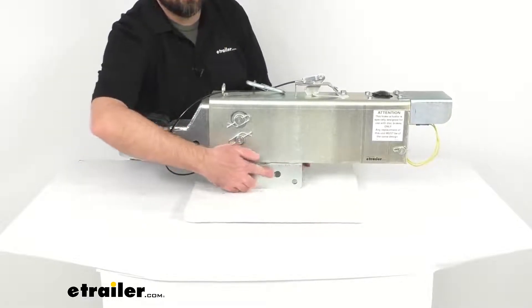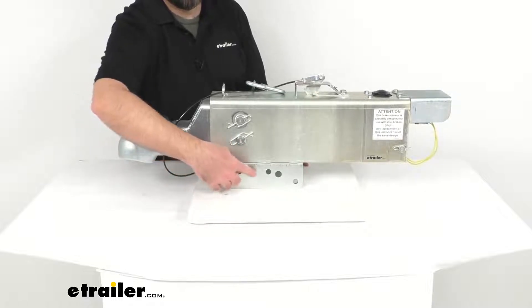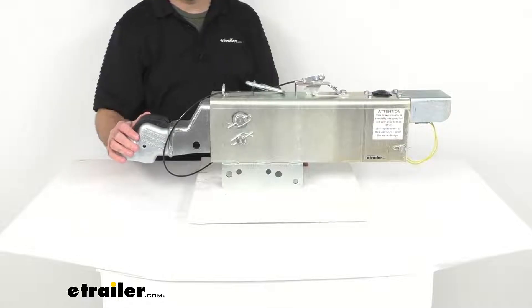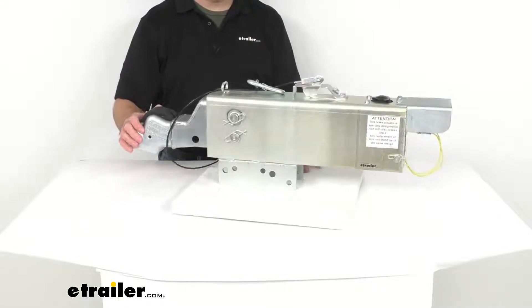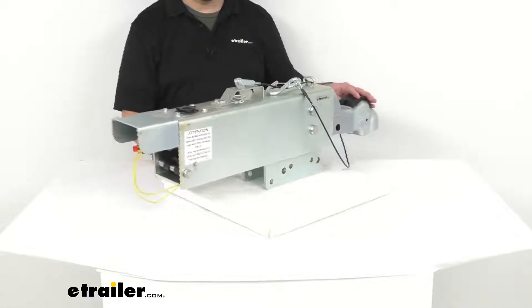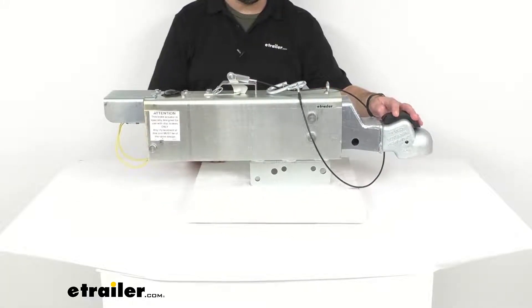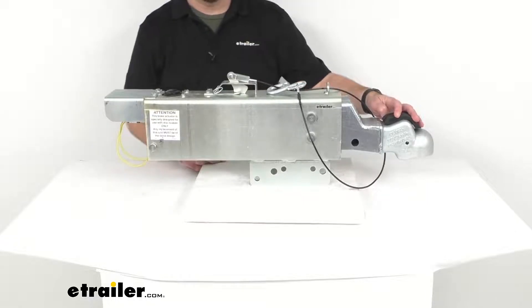This is a bolt on installation with a 5 hole case which is universal. It has 5 mounting holes on each side of the actuator. It requires 1/2 inch by 4 1/2 inch grade 5 bolts for installation. They are not included so you would have to source those locally.